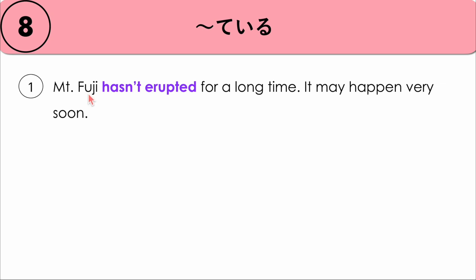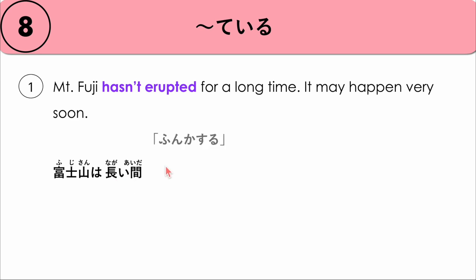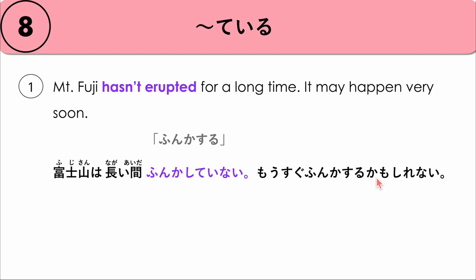Now let's look at examples of how to use this to recall information from the past. For example: Mount Fuji hasn't erupted for a long time, and it may happen very soon. Two people are talking about how Mount Fuji is about to erupt very soon because it hasn't erupted for a long time. 富士山は長い間 噴火していない — hasn't erupted — もうすぐ噴火するかもしれない — it may erupt very soon. It's related to the present time.